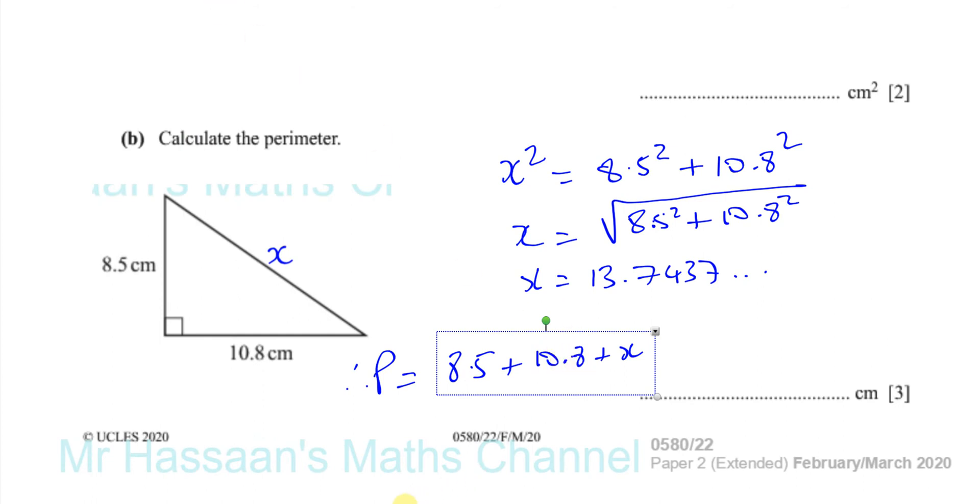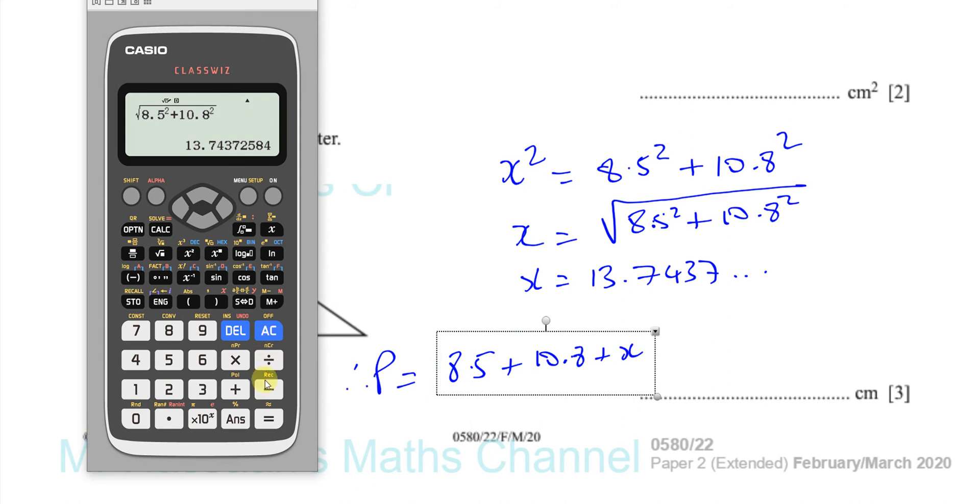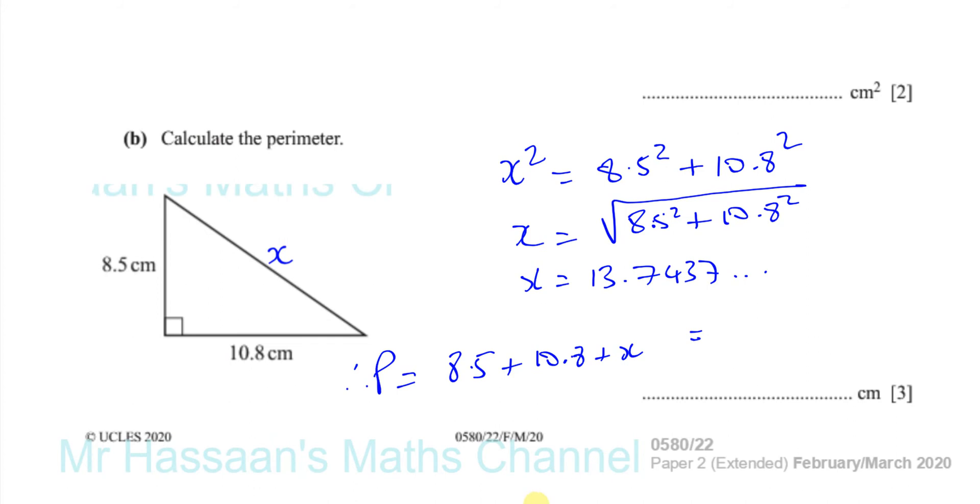Okay, so we have the answer plus 10.8. Whoops. So we have to be careful. 10.8 plus 8.5. 8.5. And that gives you your perimeter, which is 33.0437. So you've got perimeter is equal to 33, was it? Sorry, 33.0437.